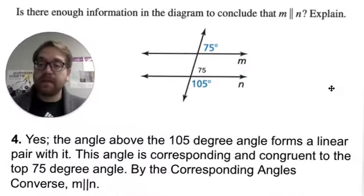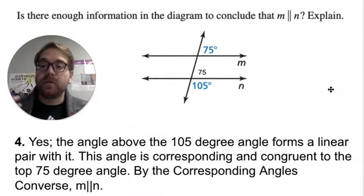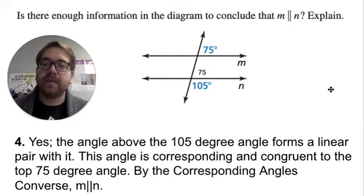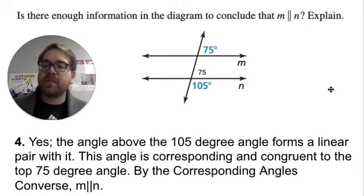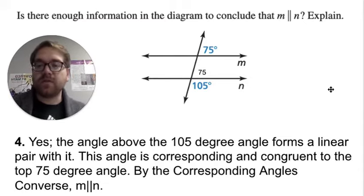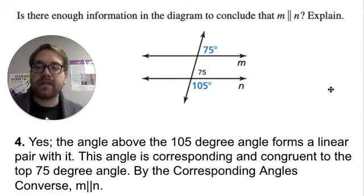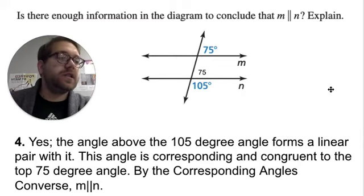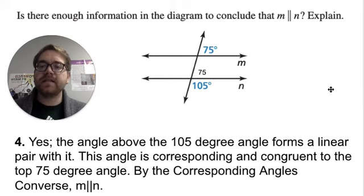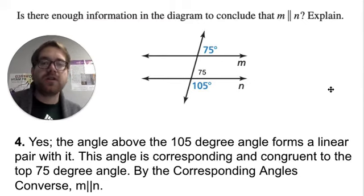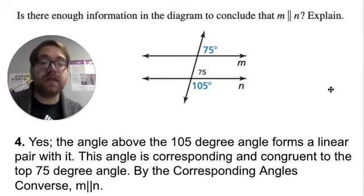What you'll mainly be doing in this lesson is providing your reasoning and explaining your thinking as to why two lines are parallel or not parallel. This is number four in your notes. Looking at lesson 4.3, page 13, this question says: is there enough information in the given diagram to conclude that line M is parallel to N? Explain.